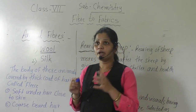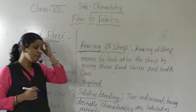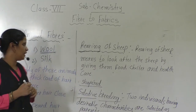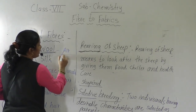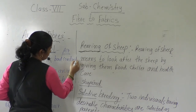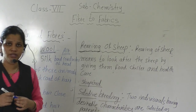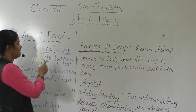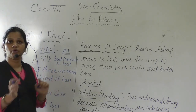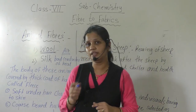We wear woolen clothes to keep our body warm. But why do we choose woolen fiber only? Wool is taken from sheep, and wool traps air. Air is a bad conductor of heat, so it does not allow body heat to exit outside. Whatever heat our body generates, it remains as it is in wool. Because wool traps air, and air is a bad conductor of heat, it does not allow heat to pass outside. That is why wool keeps us warm.